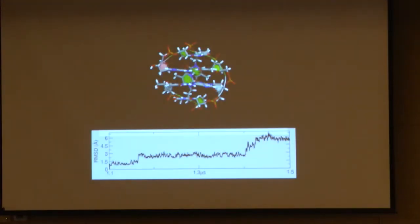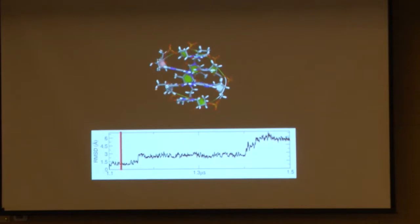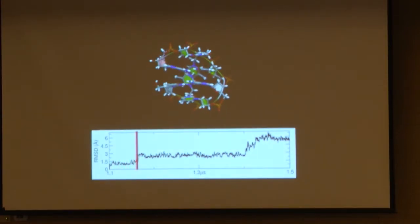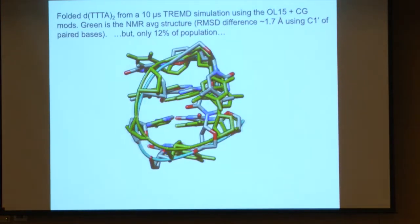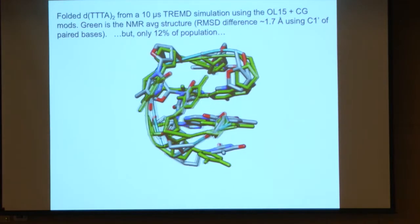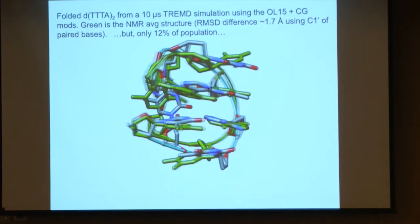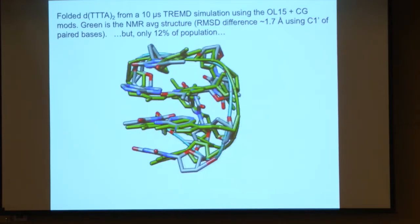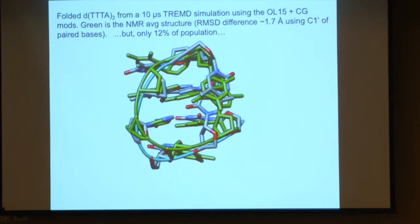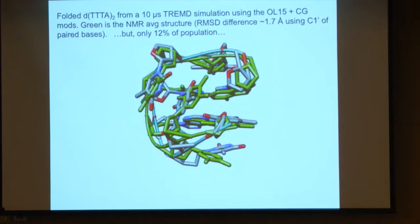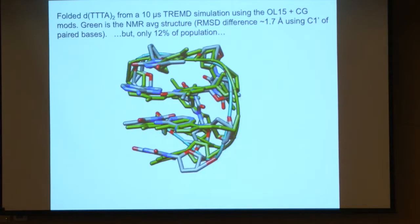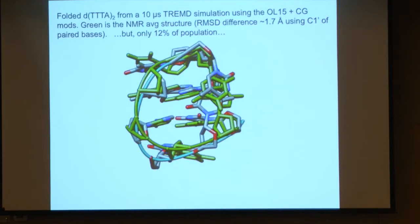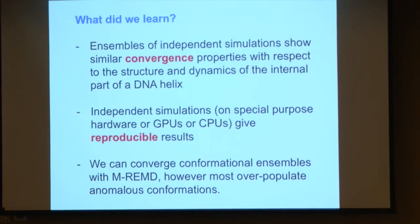With certain force fields and sufficient enhanced sampling — temperature replica exchange or multi-dimensional exchange — we can fold to the correct structure from a linear one. We can fold this mini-dumbbell and it gets pretty close to the experimental structure, but it's only 12% of the population. If the other conformations were really real they would have polluted the NMR data and you would have seen them.